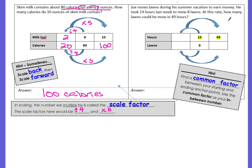Joe mows lawns during his summer vacation to earn money. He took 14 hours last week to mow 8 lawns. At this rate, how many lawns could he mow in 49 hours? Alright, so we're starting off with the ratio of hours to lawns. Okay, so here's our ratio table. Hours to lawns. We have 14 hours for 8 lawns. What is it we're wanting to change? We're wanting to change the hours to 49. So that's going to come up here in the next row, next column. And we want to find how many lawns. This is what we're looking for.